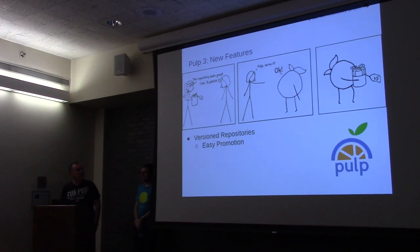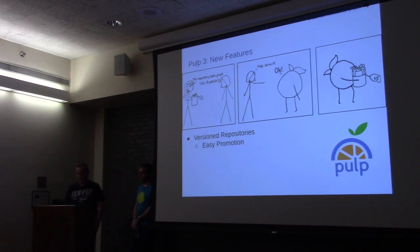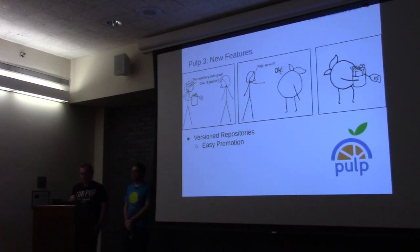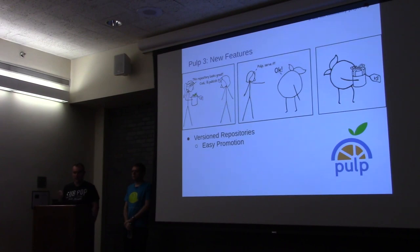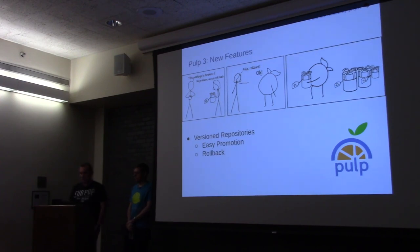So what are some features in PULP 3? First, we have versioned repositories. Any time you make a change to a repository, it creates a new version, so you always have older versions of your repository as it existed in the past. This also allows for easy promotion — if you have lifecycle environments like dev, staging, production, and you have published repository versions, you can switch out and distribute a different repository version in a matter of seconds. You can also roll back: if the latest version isn't working — maybe some package update broke your development environment — you can roll back to an earlier version in seconds.